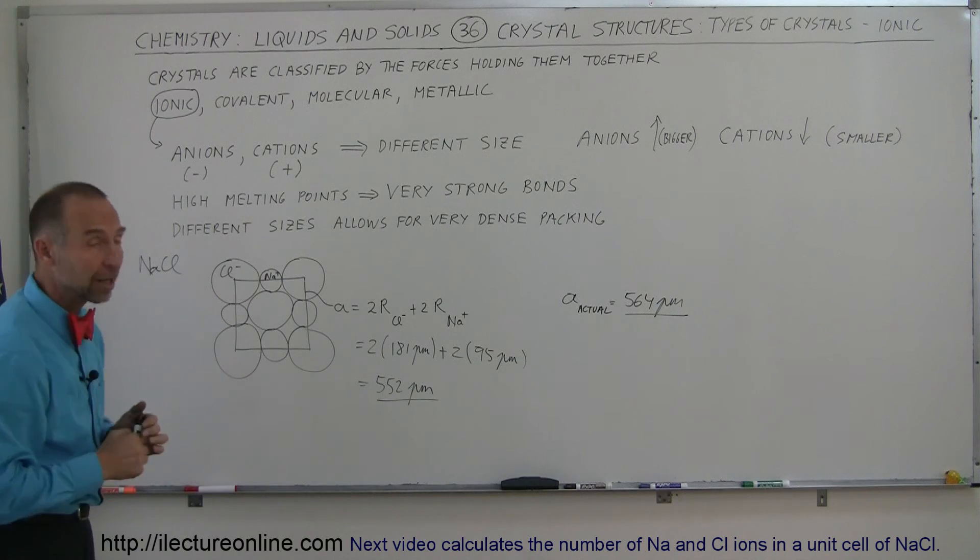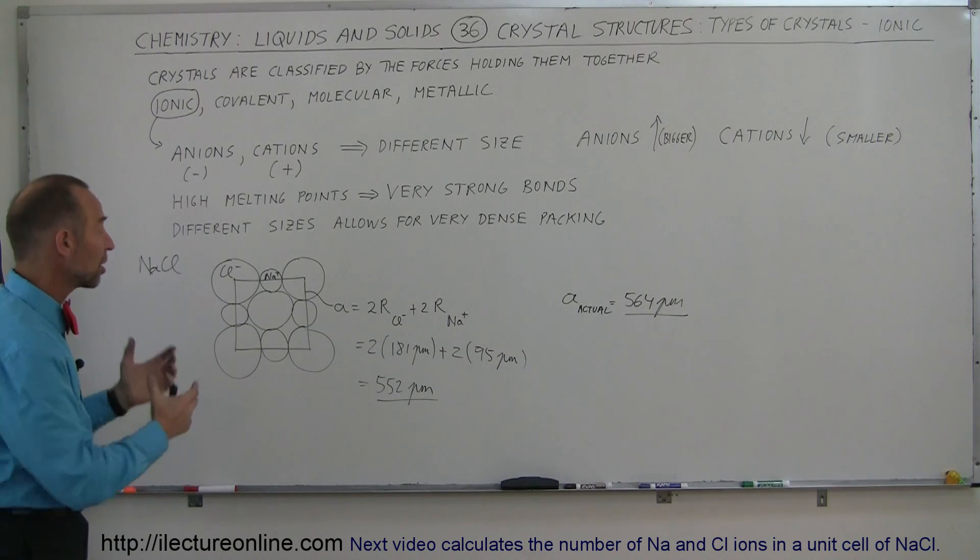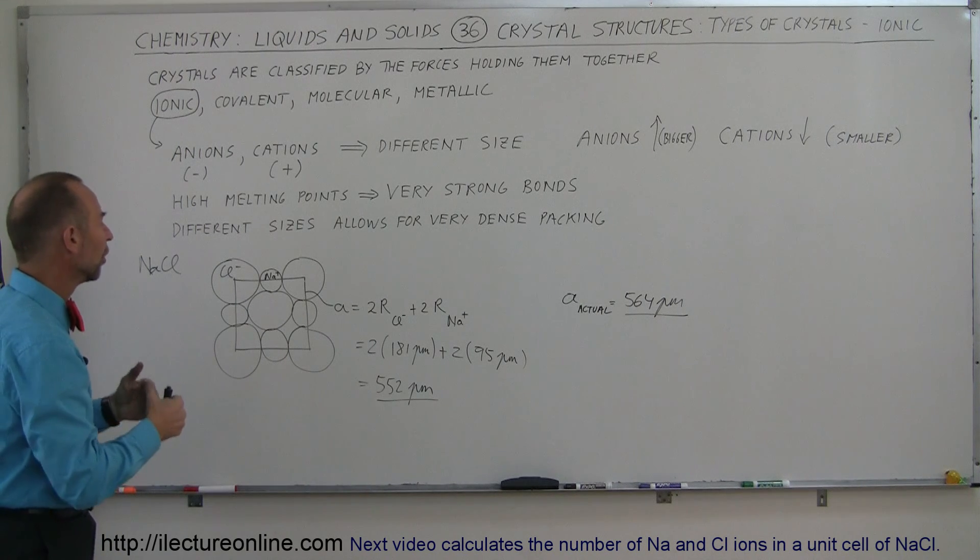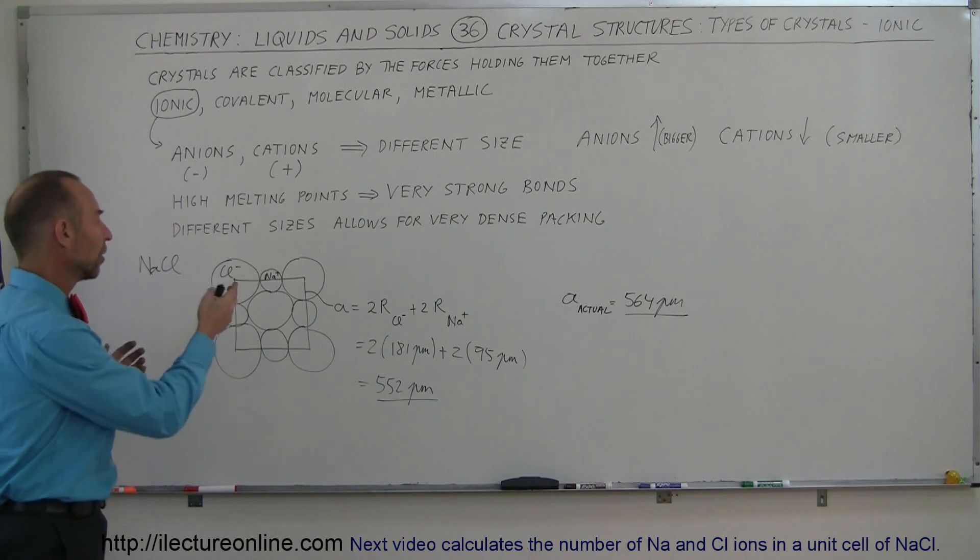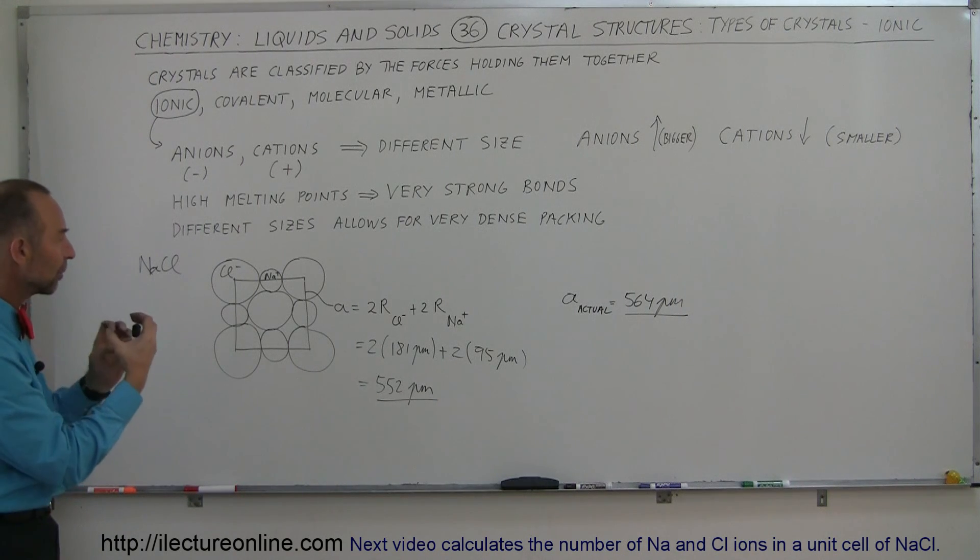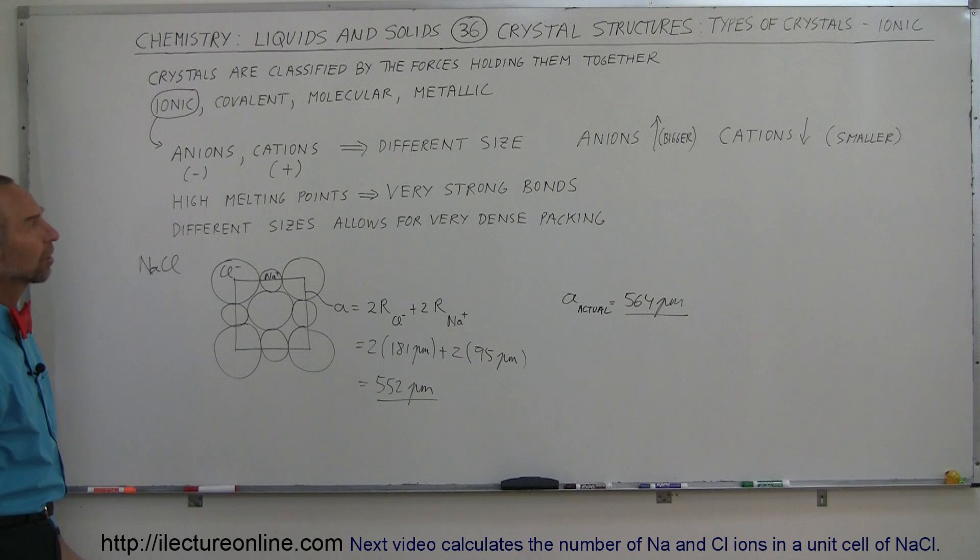But anyway, talking about ionic bonding, it tends to be very strong, it tends to be a very dense pack, it tends to have very high melting points and boiling points due to the fact that these are strong bonds because of the exchange of electrons and differential in size. They're able to really bond together quite strongly like that.